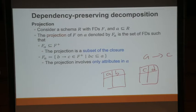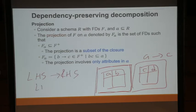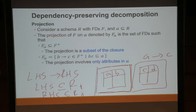What we want to know is which functional dependencies we can still enforce on each of the fragments. The functional dependencies that can be enforced here can only involve attributes within this table. So the left-hand side must be a subset of this fragment, and the right-hand side must be a subset of this fragment. Those are the functional dependencies we can capture — that's basically what projection of FDs means. It must be in F+ and only involves attributes within that particular relation.